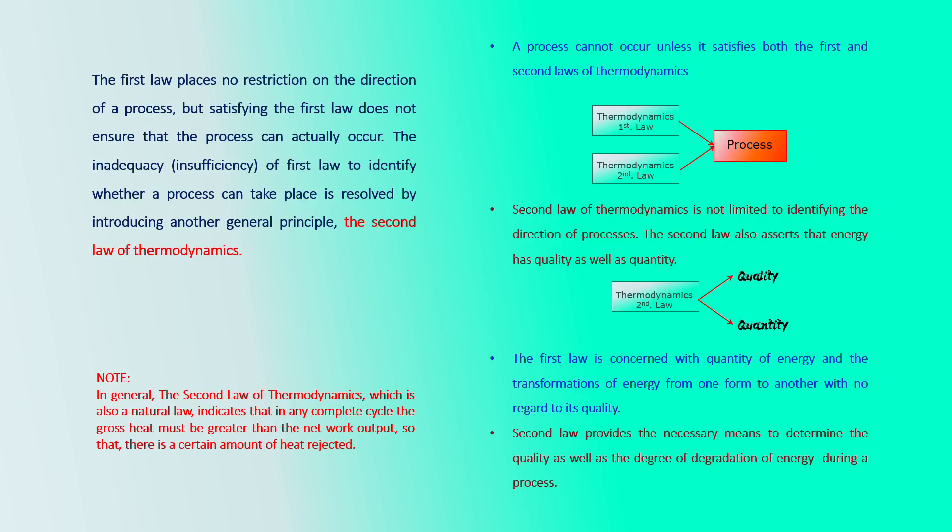The second law of thermodynamics, which is also a natural law, indicates that in any complete cycle, the gross heat supply must be greater than the net work output, meaning there is always a certain amount of heat rejected.